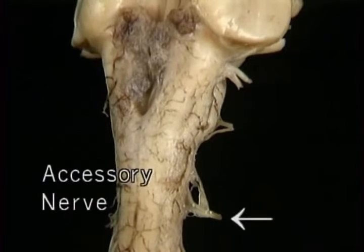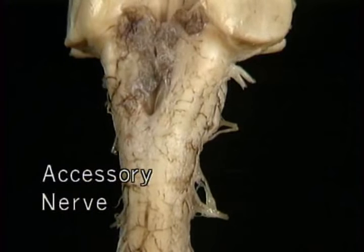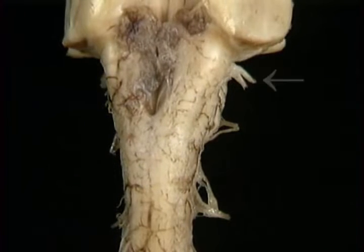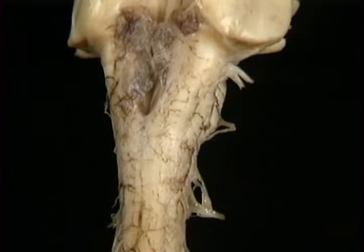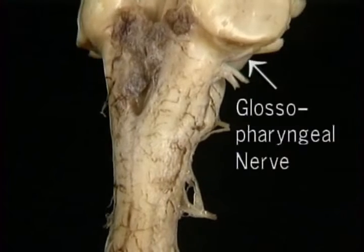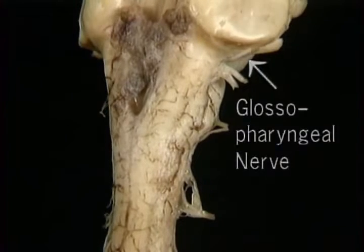The ventral aspect of the medulla is marked on each side by bulges — the pyramid and the olive. Emerging from the ventral and lateral surfaces of the medulla are the filaments of the four lowest cranial nerves: the twelfth, the hypoglossal; the cranial part of the eleventh, the accessory; the tenth, the vagus; and the ninth, the glossopharyngeal.